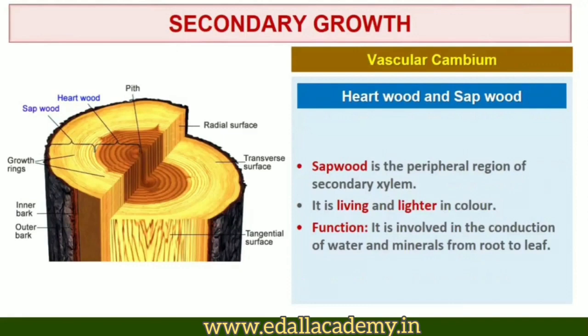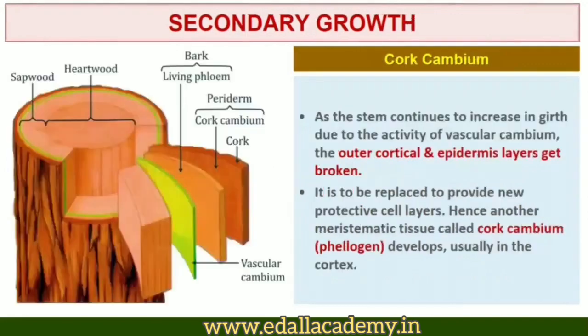The peripheral region of the secondary xylem is lighter in color and is known as sapwood. It is involved in the conduction of water and minerals from root to shoot. Next is cork cambium. As the stem continues to increase in girth due to the activity of vascular cambium, the outer cortical and epidermis layers get broken and need to be replaced to provide new protective cell layers.